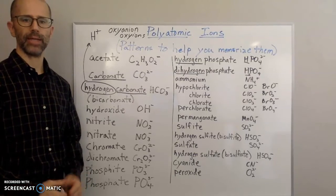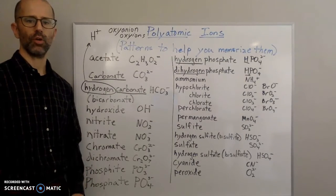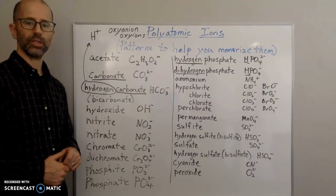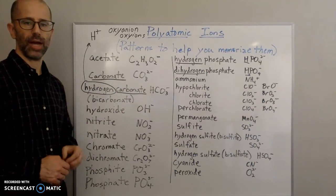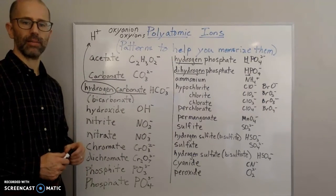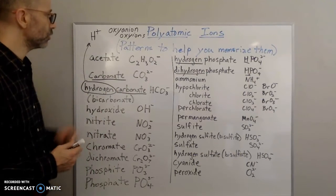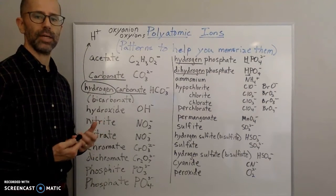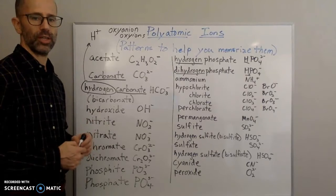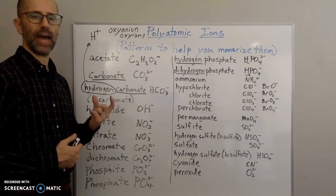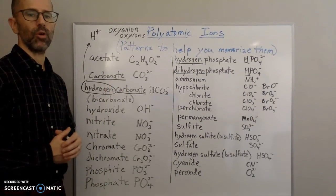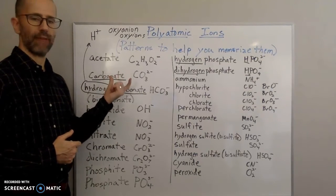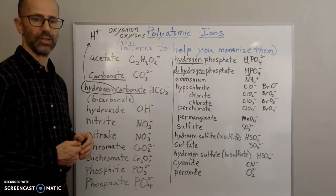Hello everyone, welcome back. My name is Mr. Cobalt, and in the last video — part one — I was explaining what the polyatomic ions are and how to memorize them. To recap: polyatomic ions are called polyatomic because they have more than one atom. Before this, if you only have an ion made up of one atom, that's going to be a monatomic ion.